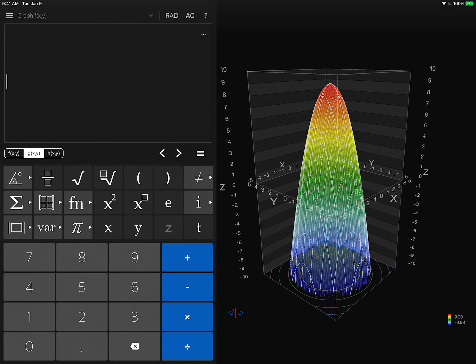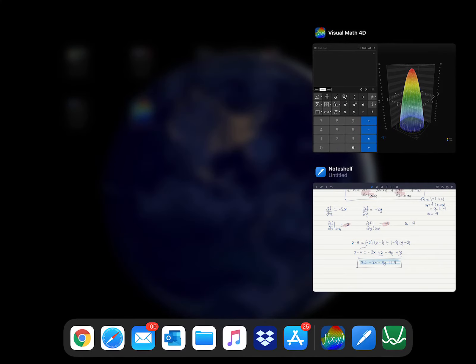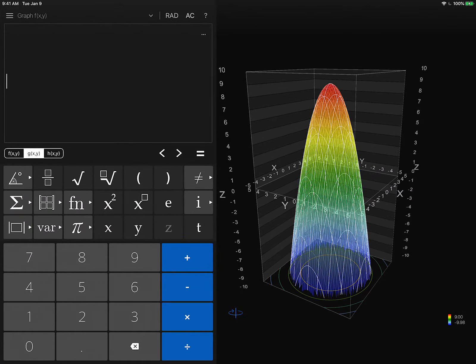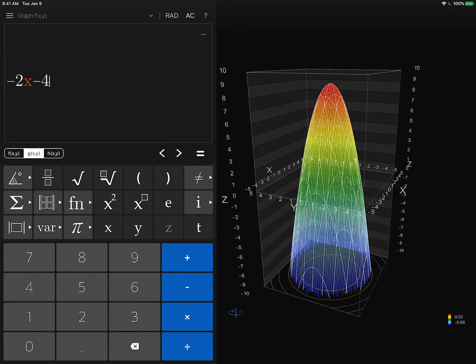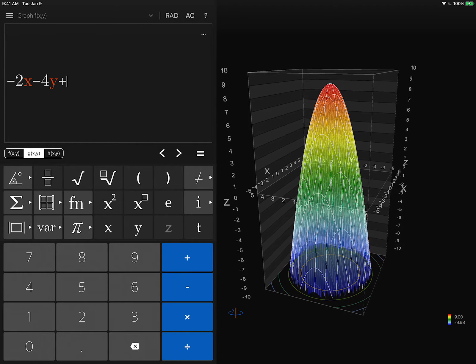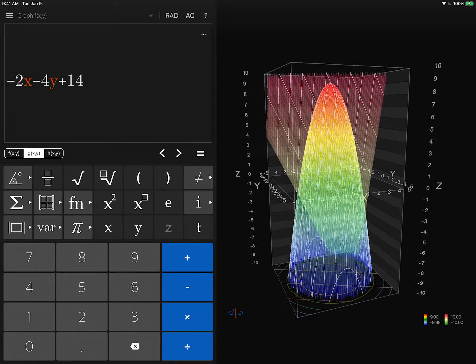And in my function g, I'm going to add the one that I had. That's why I had it solved for z, just so that I can add it here as a function. So z is negative 2x minus 4y plus 14. I'm going to put negative 2x minus 4y plus 14. I'm going to press equal sign and there's the plane that's tangent to the surface.